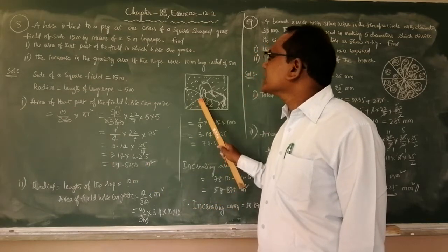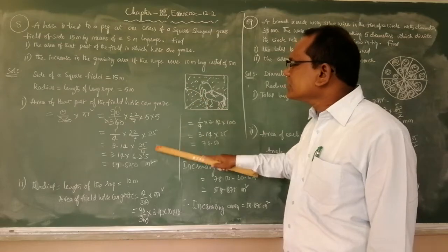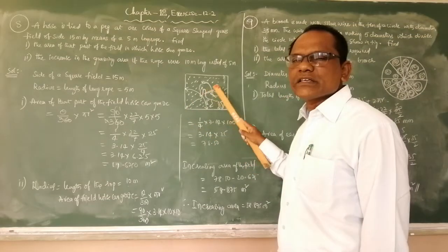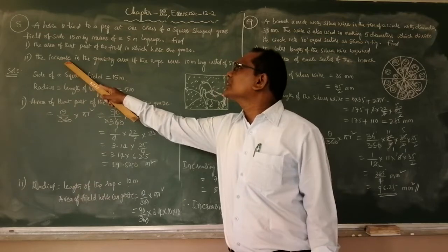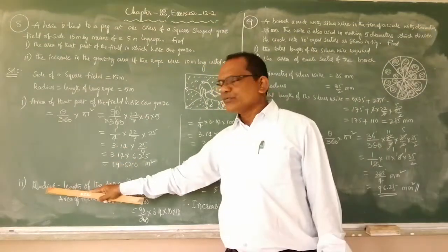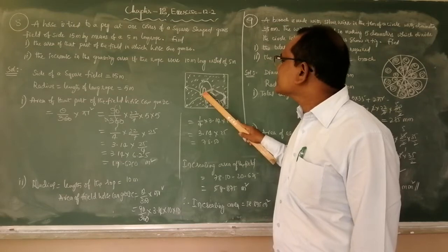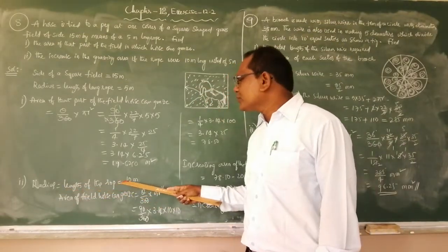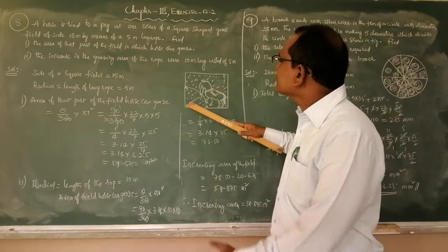The horse can graze 19.625 square meters with the rope length of 5 meters. In the second part, they are increasing the length of the rope. The first part had rope length 5 meters; now it is 10 meters. Therefore radius equals the length of the rope, now 10 meters. The angle remains the same. As the radius increases, more area can be grazed by the horse.